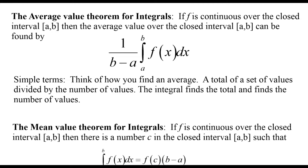The average value theorem for integrals: if f is continuous over the closed interval a to b, then the average value over the closed interval can be found by 1 over (b minus a) times the definite integral from a to b of f(x) dx. You add up a total set of values divided by the number of those things. The integral acts as an accumulator adding up all the area, and (b minus a) represents the number of values underneath.